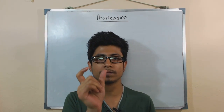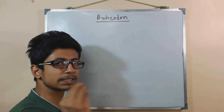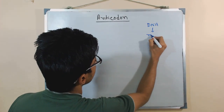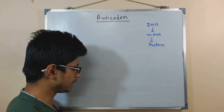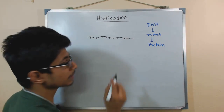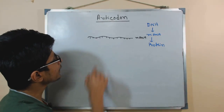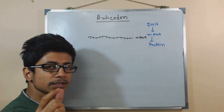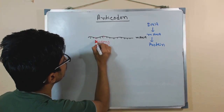A codon is a three nucleotide stretch of sequence which codes for proteins. According to the central dogma of biology, we begin with the DNA molecule, from DNA it produces mRNA, and from mRNA we produce proteins. This mRNA is a single-stranded structure having different bases coming out from it.